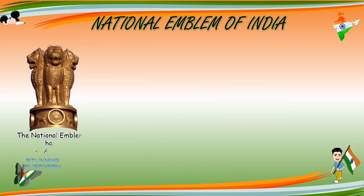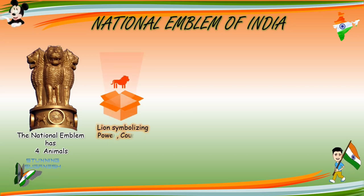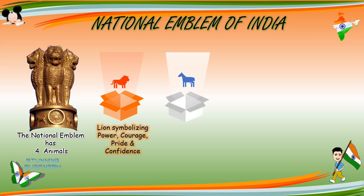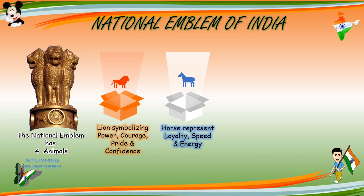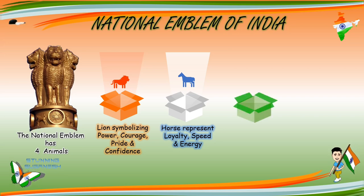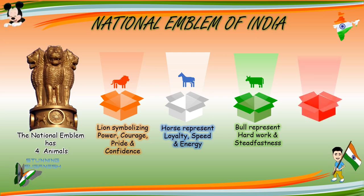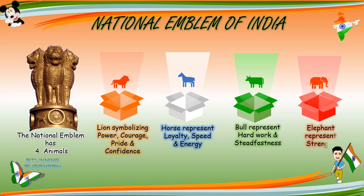The national emblem has four animals. Lion symbolizing power, courage, pride and confidence. Horse represents loyalty, speed and energy. Bull represents hard work and steadfastness. Elephant represents strength.